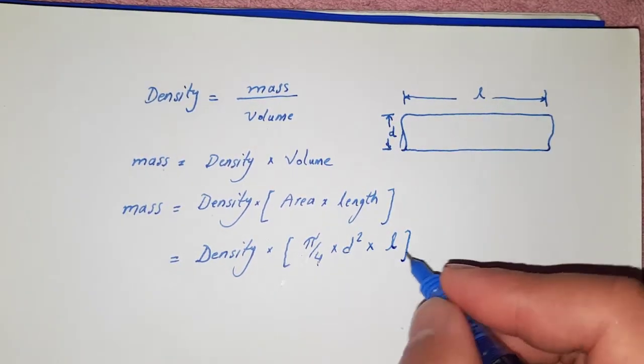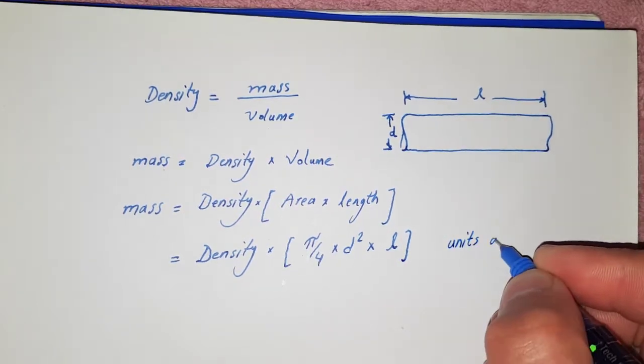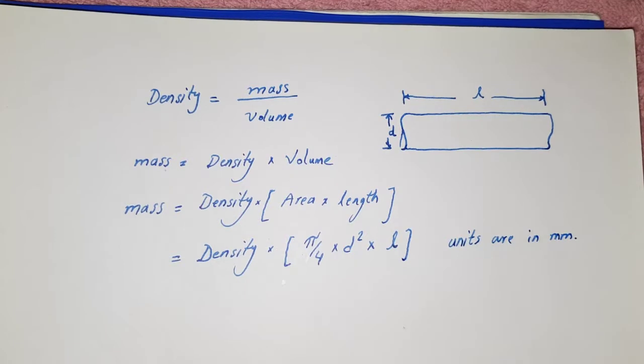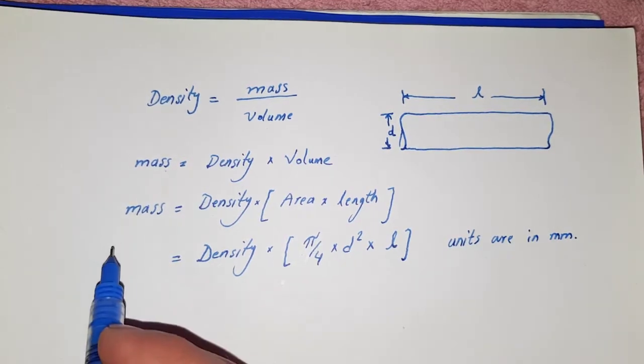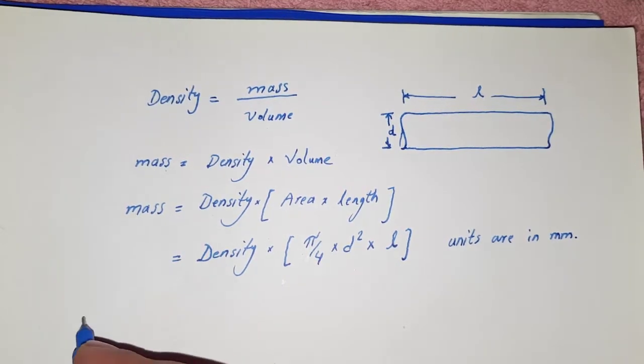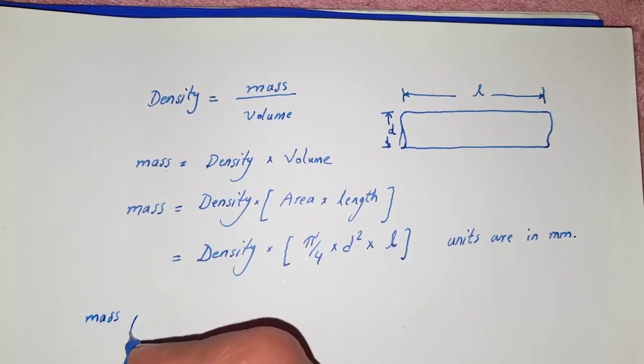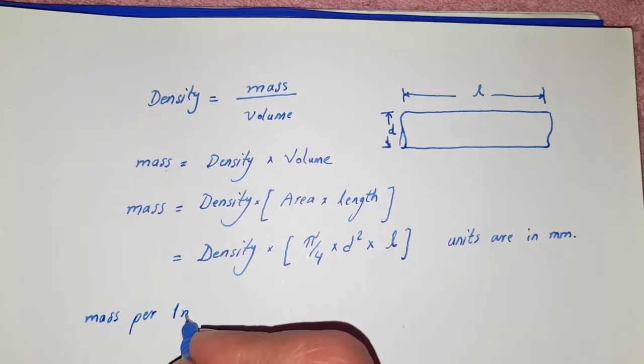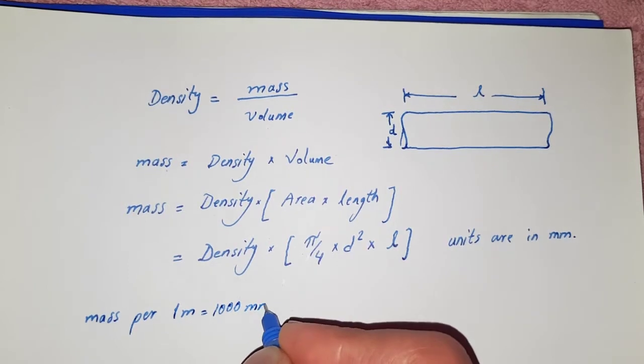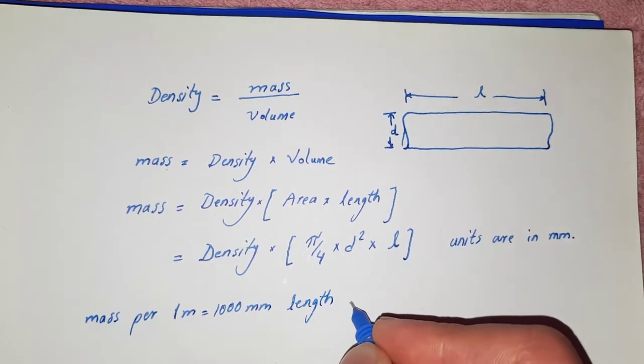These all units are in millimeters. This is the general formula for the mass. Now let's write the mass of bar per one meter, that is equal to thousand millimeter length.